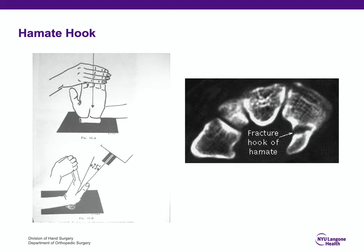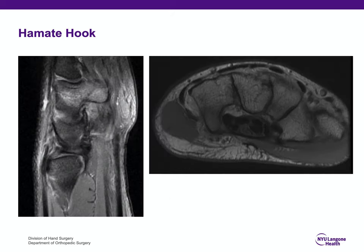The hamate hook can also be seen on a carpal tunnel view, but when you order radiographs for suspected hamate hook fracture, you need to order a special carpal tunnel view to evaluate for the fracture. MRI can also be helpful, but the gold standard for diagnosis of hamate hook fracture is CT scan.